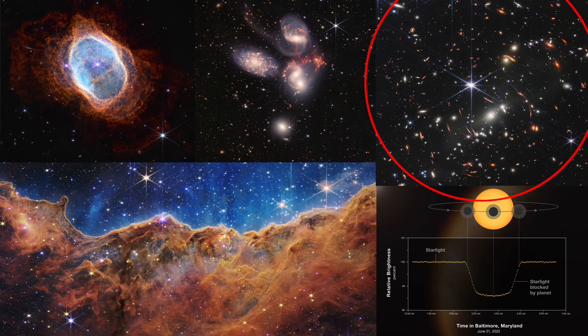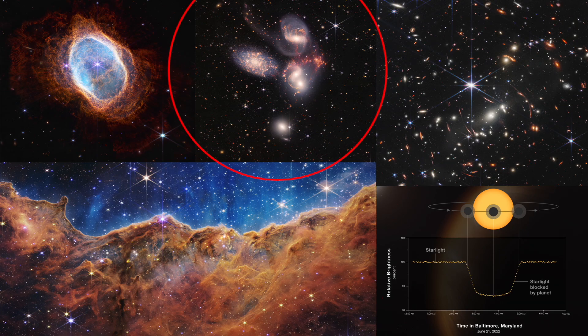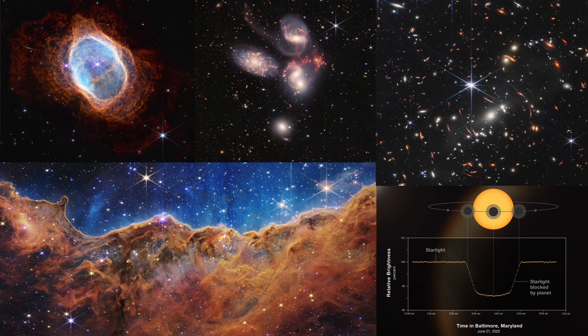JWST's first images included the galaxy cluster SMACS 0723, the nebula NGC 3132 aka the Southern Ring Nebula, the large hot planet WASP-96b, the galaxy group Stefan's Quintet, and the star-forming region within the Carina Nebula. There are many variations of the images used to describe these objects, which you can access in the description section of this video under resources.